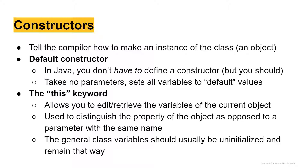The default constructor takes no parameters and sets all the class variables to default values. I put 'default' in quotes because what these values are can change depending on your class — there isn't always a universal default. Typically, if you have an integer, the default is zero, but it depends. The great thing about defining your own default constructor is you get to decide what the values are defaulted to.